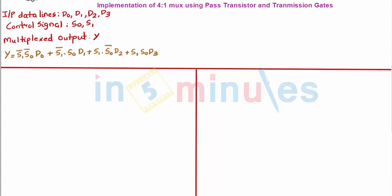This expression clearly tells me that my output will be equal to D0 if S1̄ is high and S0̄ is high, or my output will be equal to D1 if S1̄ is high and S0 is high, or my output will be equal to D2 if S1 is high and S0̄ is high, or my output will be equal to D3 if S0 is high and S1 is high.